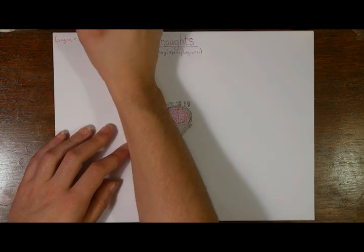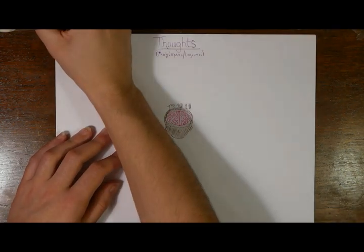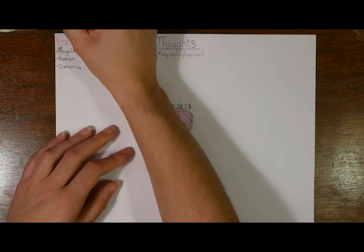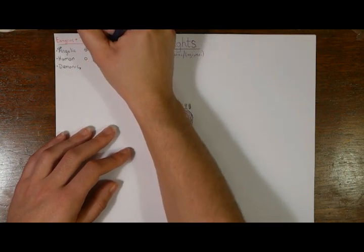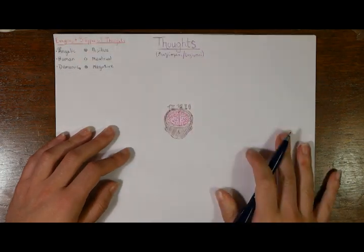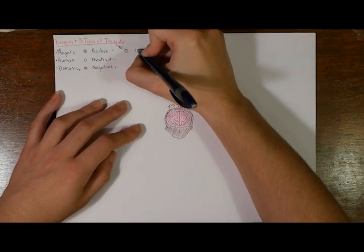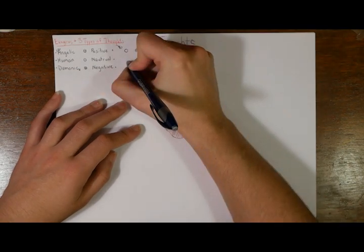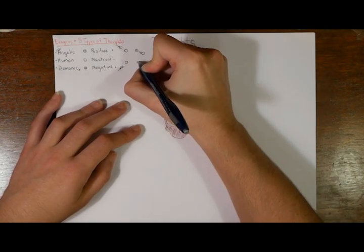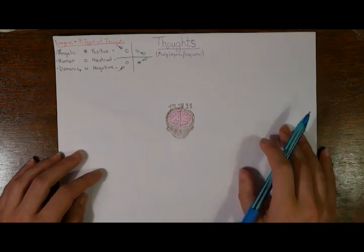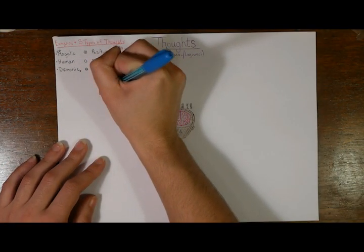This guy from the late 4th century called Evagoras the Solitary recognized in his text on discrimination that there are three types of thoughts, which he calls angelic, human, and demonic. In today's pop culture we might call them positive, neutral, and negative thoughts. He also said, sometimes thoughts are cut off and sometimes they do the cutting off. Evil thoughts cut off good thoughts and in turn are cut off by good thoughts.